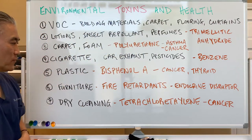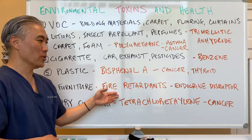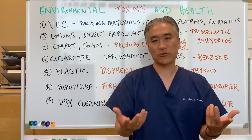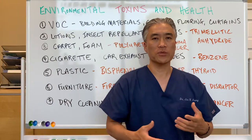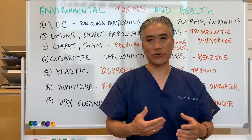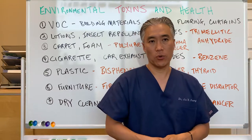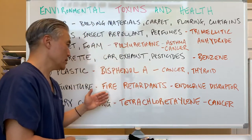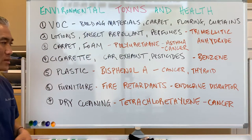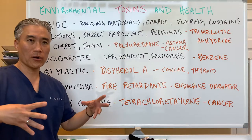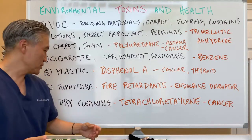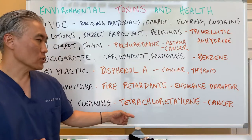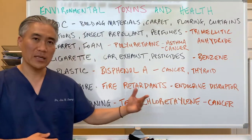The other one is furniture. A lot of furniture now comes with fire retardants, and they become endocrine disruptors. Endocrine disruptor means certain hormones that regulate the endocrine system, like your thyroid or insulin — it can impact the endocrine system and is very detrimental to our hormone systems. Dry cleaning has something called tetrachloroethylene, and it's related to cancer.